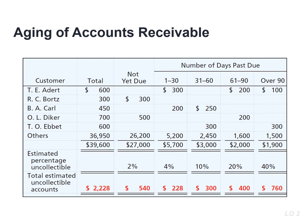For example, accounts receivable is $39,600, of which $3,000 are 31 to 60 days past due. After the company arranges the accounts by age, it determines the estimated percentage uncollectible or bad debt loss rate. This is based on past experience.